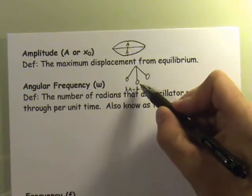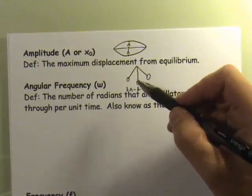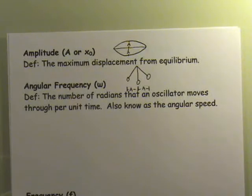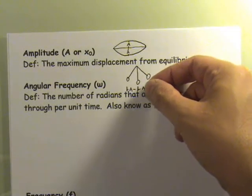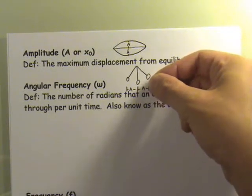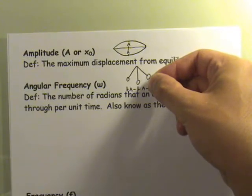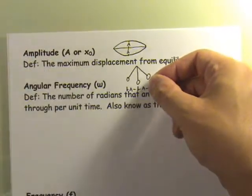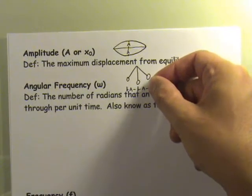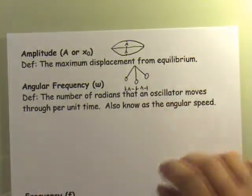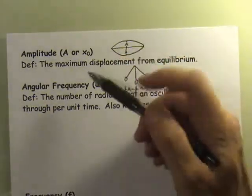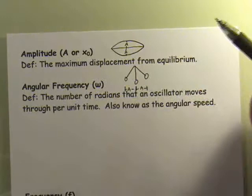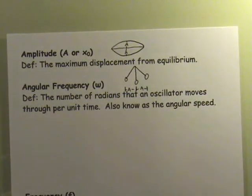The reason for using X-naught is that displacement is frequently symbolized by X. Oftentimes a simple harmonic oscillator is started in motion by pulling it out to the side, so that point where you let go could be referred to as the initial displacement, and X-naught is commonly the term for that. You don't have to start it that way, but because it is so common, you'll often see X-naught. In some books they say A; in others, X-naught — but it means the same thing: the maximum displacement from equilibrium.